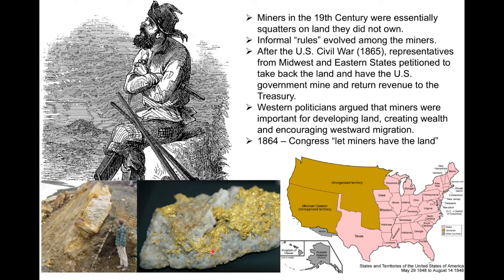Some of the gold shown in the bottom image is what they would find along the river bottoms. It was low-hanging fruit, easy to pull from the river bottom sediments, and easy to sell because it was almost already pure gold. When all of these people moved into that part of California, informal rules evolved among the miners in terms of who had access to land and who owned the land.